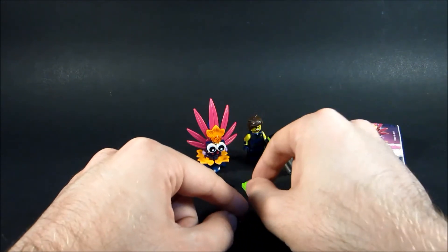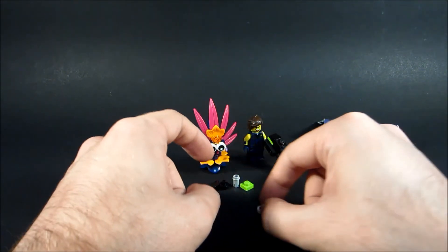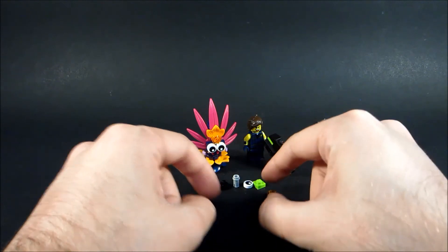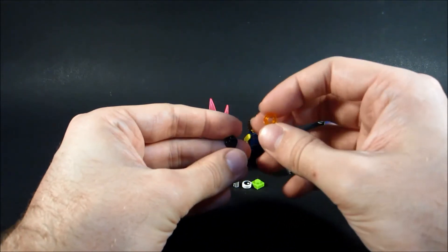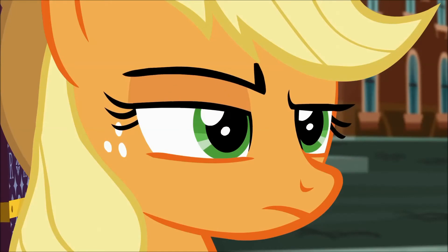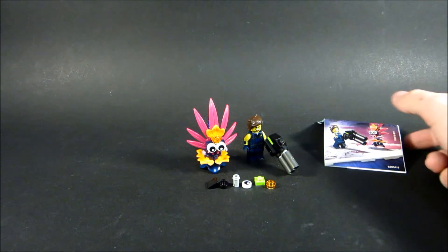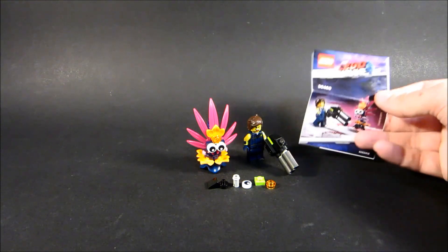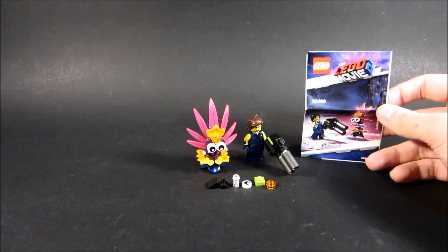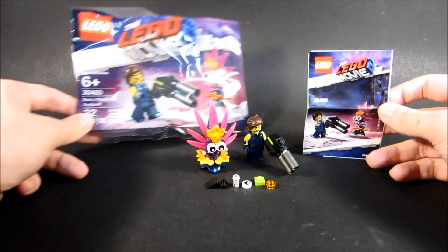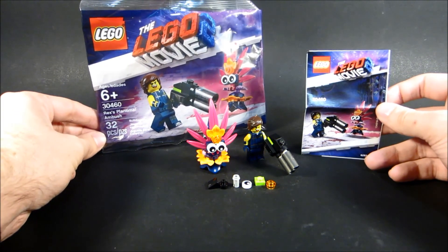And I'll pick up a second one. I guess I should probably mention this, there's a number of extra pieces. Hey look, it's our favorite things, the little hole in the nipple. So anyway, this has been MCA LEGO Boy with 30460 Rex's Plantimal Ambush. See you guys.